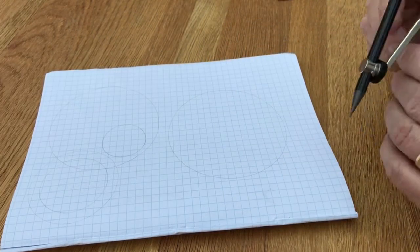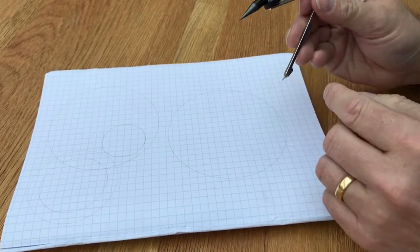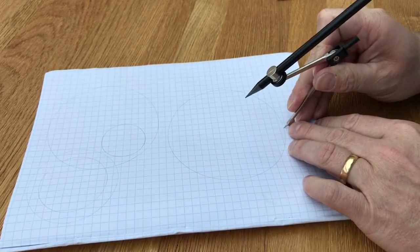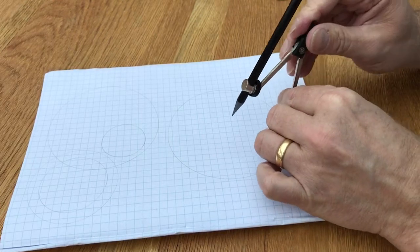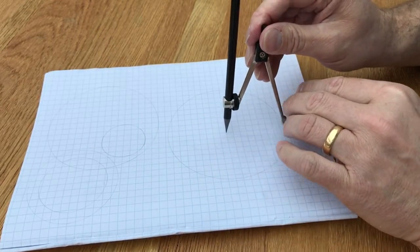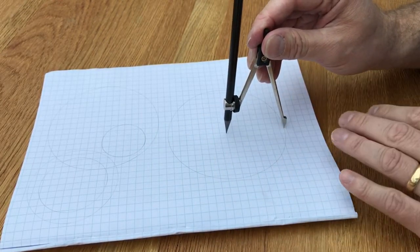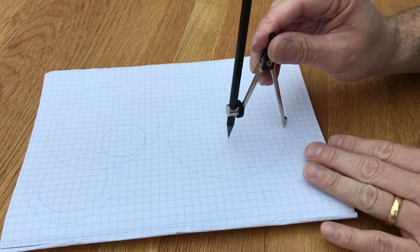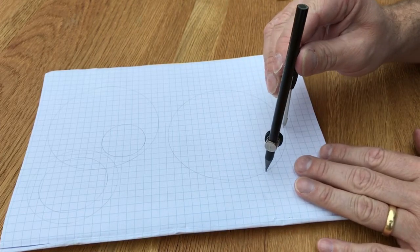Nice large circle. Now what I'm going to do is I'm going to put the point of my pair of compasses on the edge of the circle, and then the pencil should go exactly in the middle. If it's moved slightly, just adjust it so it's perfect.